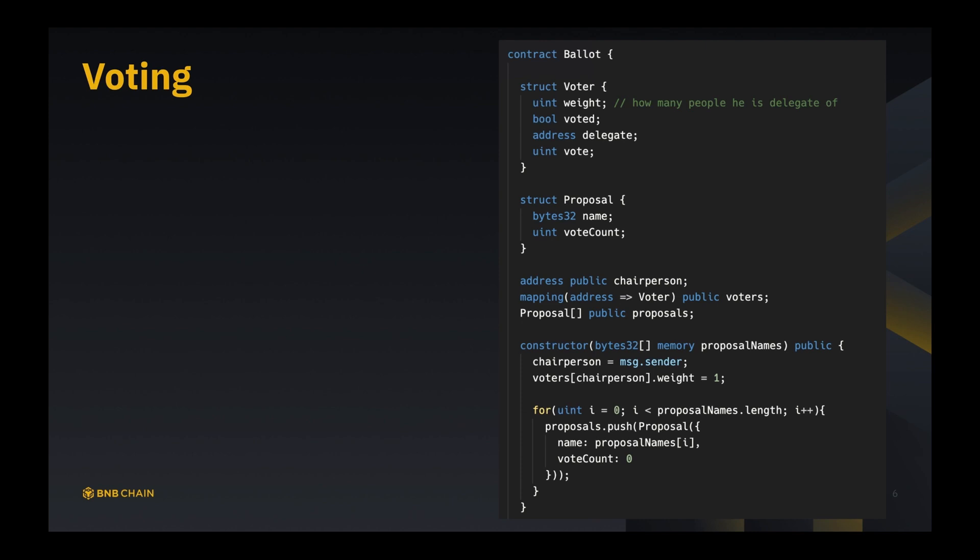So if your delegate has already made his choice, then you will directly vote to that proposal because he is going to vote for you. In our specification, now we can look at our code. First we have a contract called Ballot. Next we define two structures of packed data to describe and represent our instances.